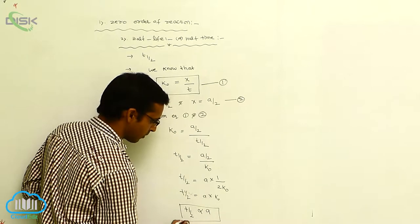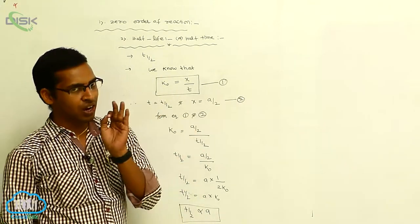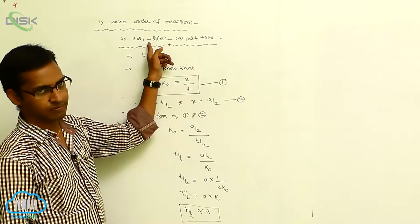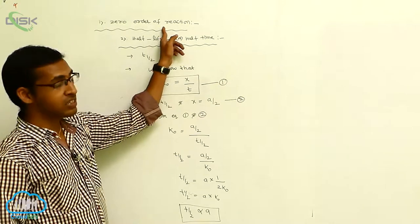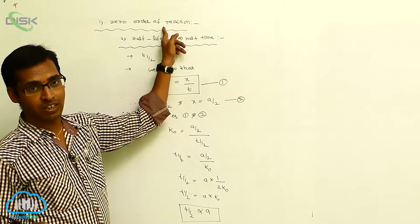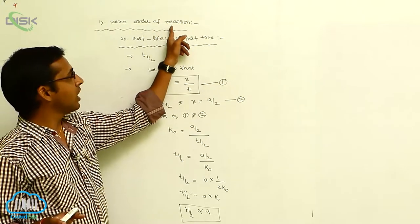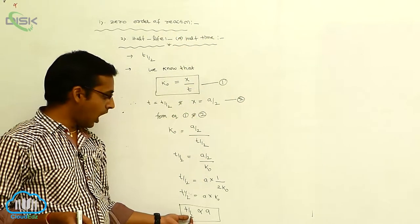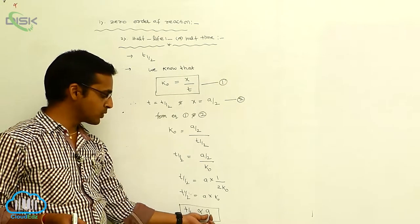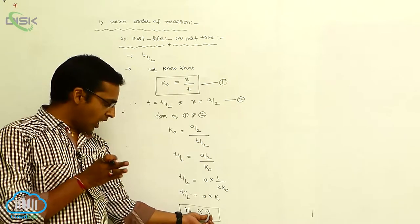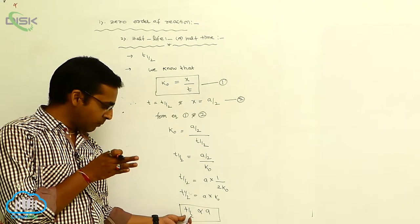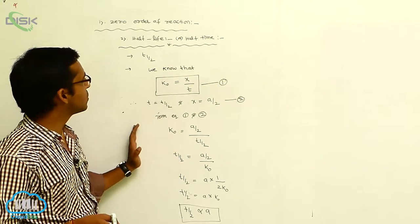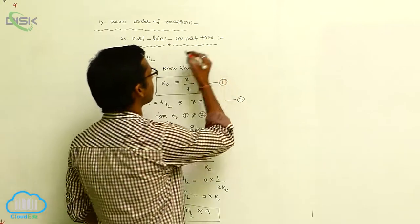So t½ equals A/(2K₀), meaning t½ is directly proportional to A. The zero order of reaction depends on half life. But zero order of reaction does not depend on concentration term — that is important. It depends on half time: t½ is directly proportional to A. After completion of t½ time, its rate of reaction increases.